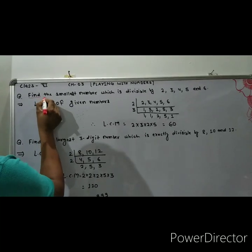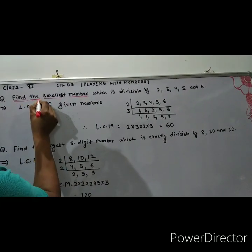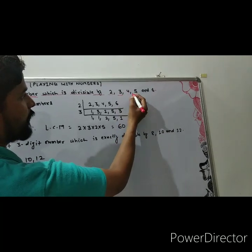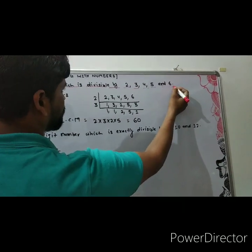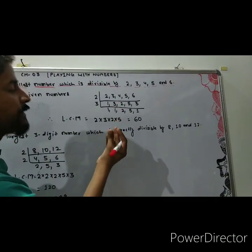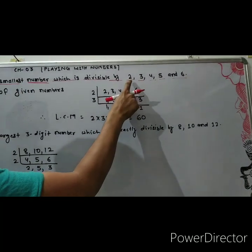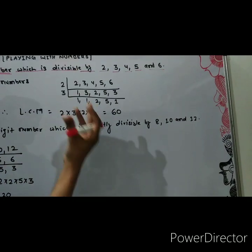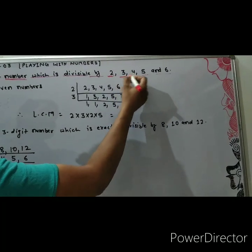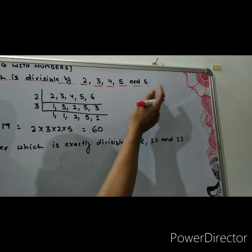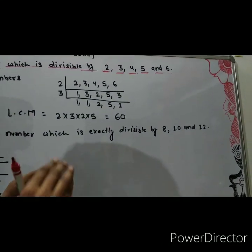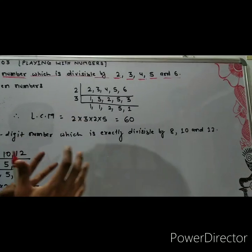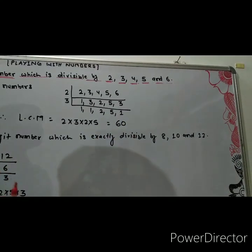My first question is: find the smallest number which is divisible by 2, 3, 4, 5 and 6. We have to find a smallest number which is exactly divisible by 2, 3, 4, 5 and 6. When we find the LCM of numbers, the LCM is a number which is divisible by all the numbers whose LCM we found.